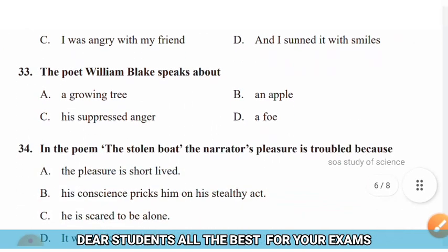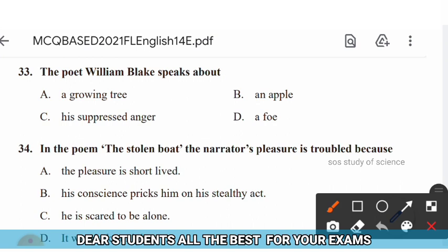Question 33: The poet William Blake speaks about — options: a growing tree, an apple, his suppressed anger, a foe. The right answer is option C — his suppressed anger.